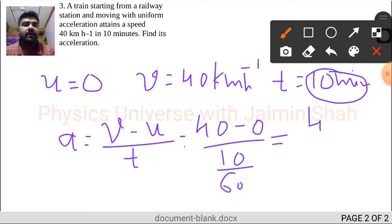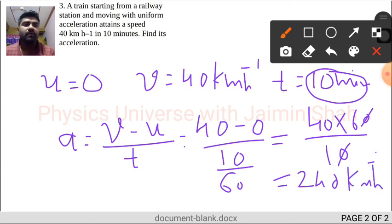So 40 into 60 upon 10, so the answer will be 240, and that is in kilometers per hour squared.